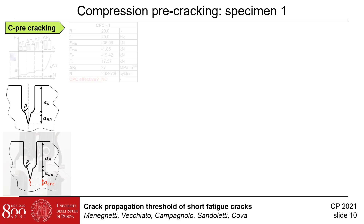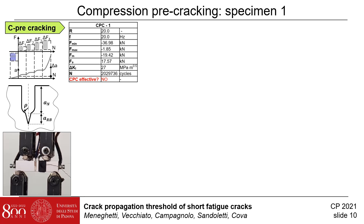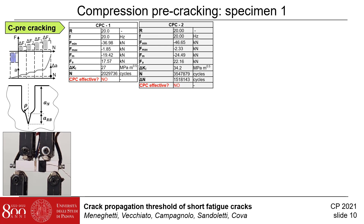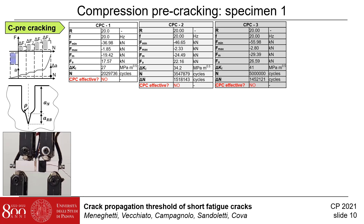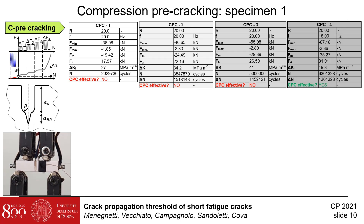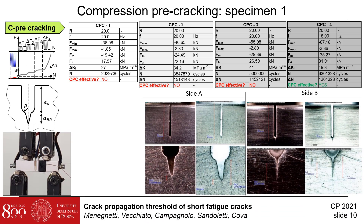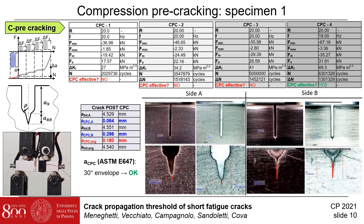The compression pre-cracking has been started by applying a load range of 35 kN at a load ratio of -20. However, after about 2 million cycles, no pre-crack was initiated. Therefore, the load range has been increased to 44 kN, but again after 1.5 million cycles, no pre-crack was visible. The load has been increased to 53 kN without any pre-crack after 1.5 million cycles. Finally, the load has been increased to 64 kN and pre-cracking has been achieved after 1.3 million cycles. The resulting pre-crack showed different lengths on the two sides of the specimen: 0.064 mm and 0.296 mm, the average being 0.18 mm, which respects the requirements of the ASTM standard.